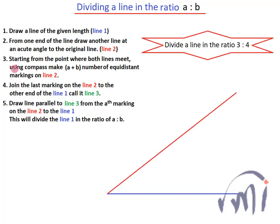Starting from the point where both lines meet, using the compass make A plus B number of equidistant markings on line number 2. So here we want to divide this blue line in the ratio of 3 is to 4. That means I'll make 7 equidistant points on this red line. So let me start.